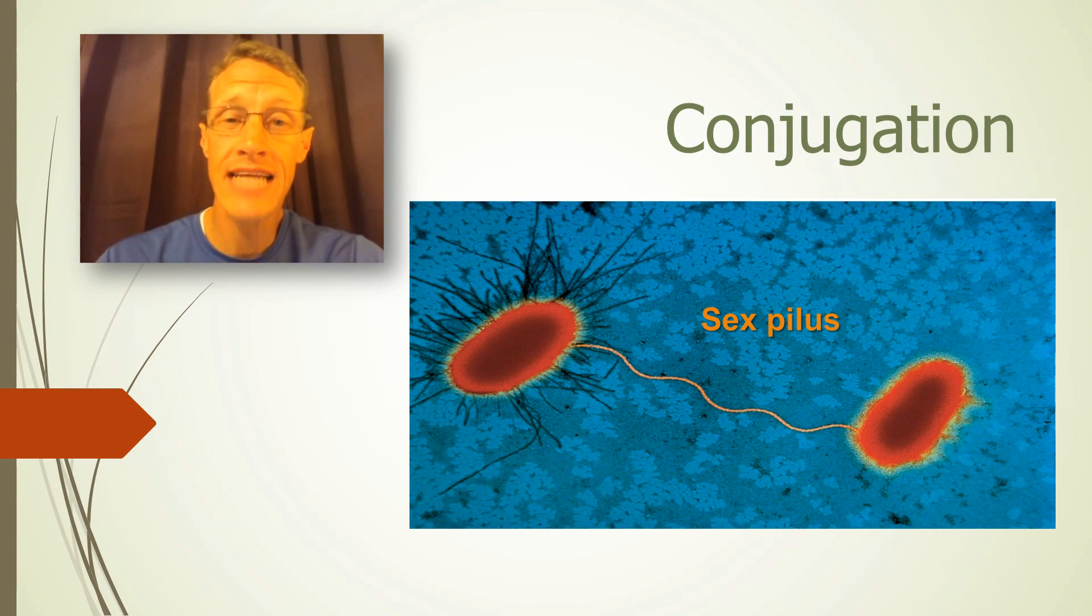Prokaryotes have been reproducing asexually for billions of years. And they're pretty darn successful at it. But that hasn't stopped them from trying to partake of some of the fun of sexual reproduction. The closest they've ever gotten? Conjugation, our second form of gene transfer.